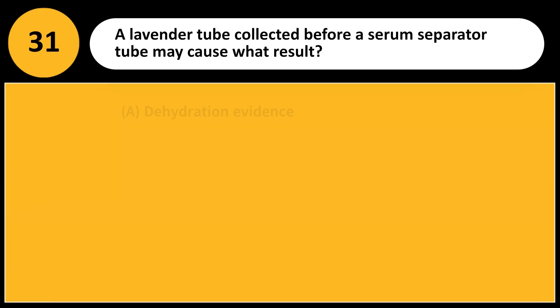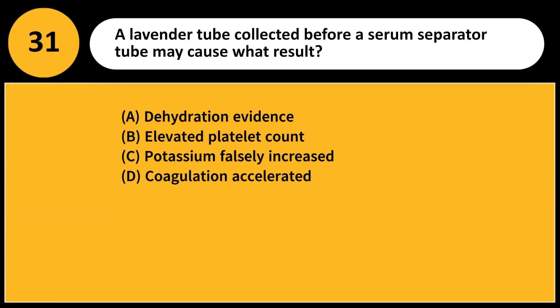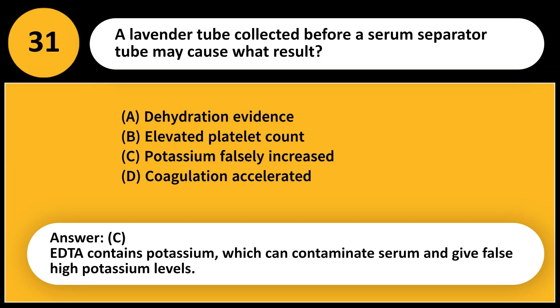A lavender tube collected before a serum separator tube may cause what result? A. Dehydration evidence. B. Elevated platelet count. C. Potassium falsely increased. D. Coagulation accelerated. Answer: C. EDTA contains potassium, which can contaminate serum and give false high potassium levels.